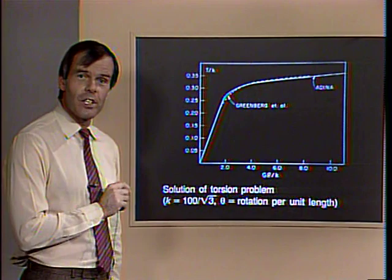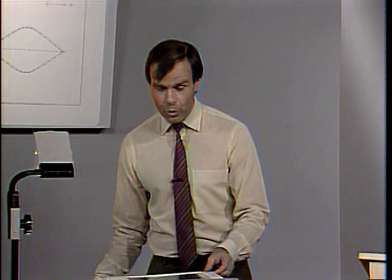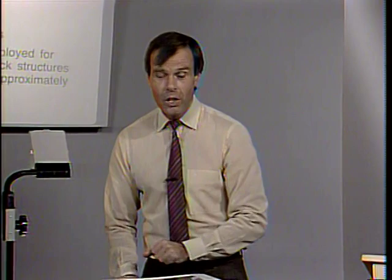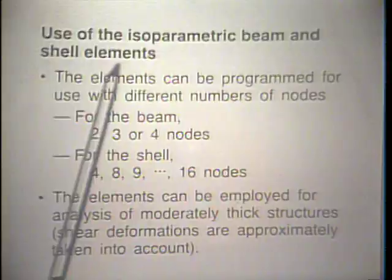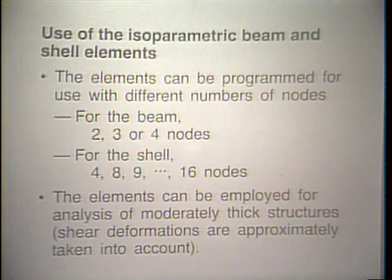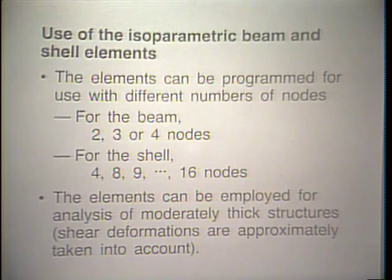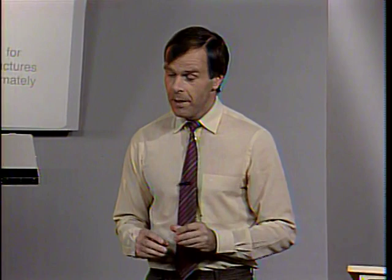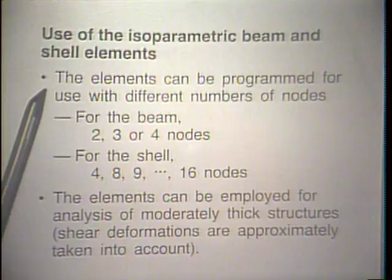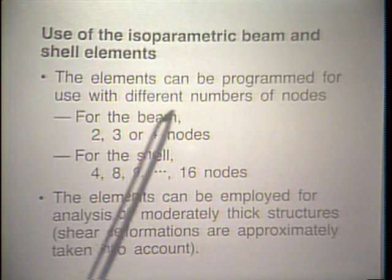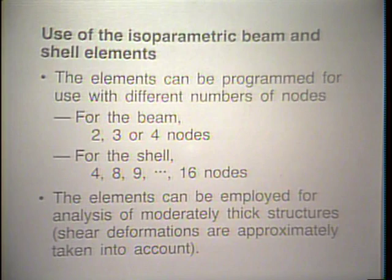Let me continue with the discussion of isoparametric beam and shell elements. One interesting point is that these elements can all be programmed for use with different numbers of nodes. For the beam, we can have two, three, or four nodes. For the shell, we could have four, eight, nine, up to 60 nodes. The elements with these nodal point configurations can be employed for analysis of moderately thick structures, where shear deformations are approximately taken into account.